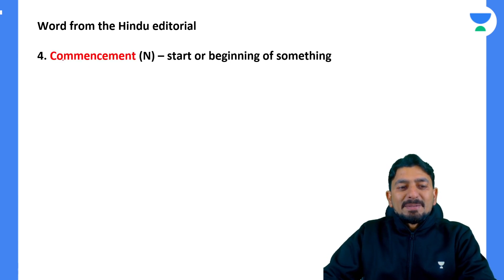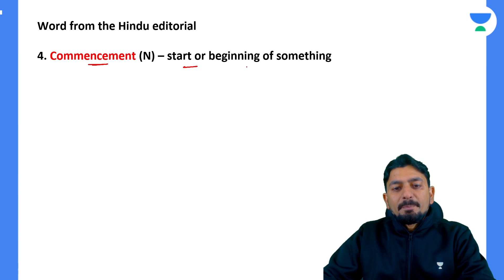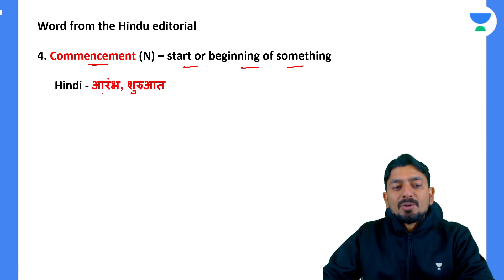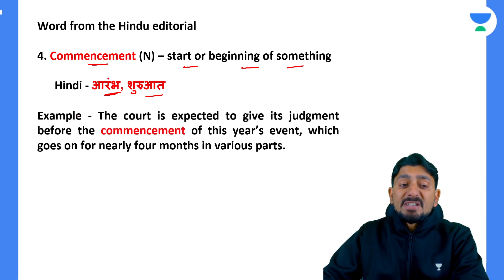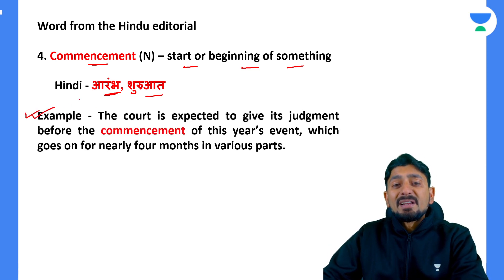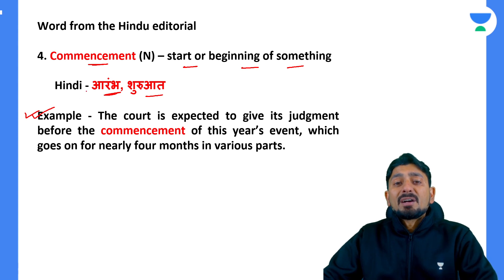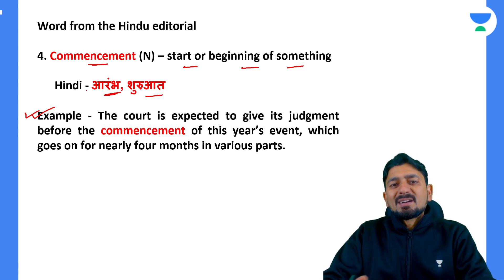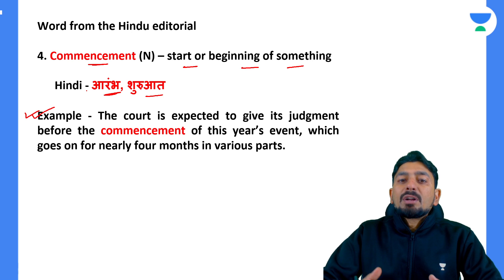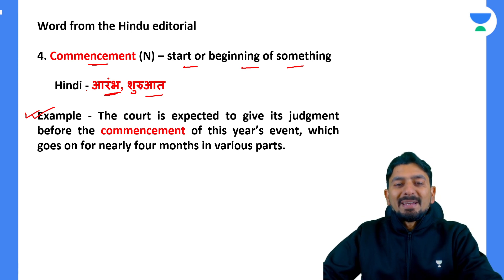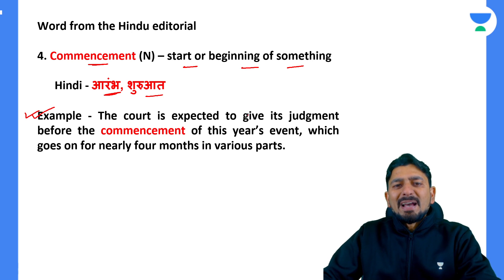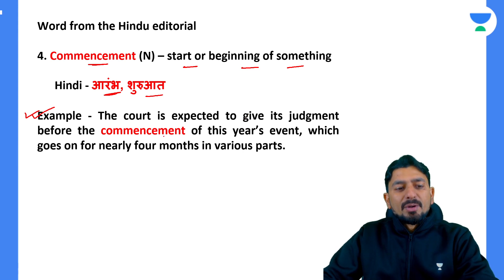The next word is 'commencement,' meaning the start or beginning of something. In Hindi, 'aarambh' or 'shuruvaat.' There was an article from January 9th about Jallikattu, a cultural game in Tamil Nadu held during Pongal, where participants control a bull. There was an ongoing animal cruelty case related to it, and an article based on that appeared in the January 9th Hindu editorial.